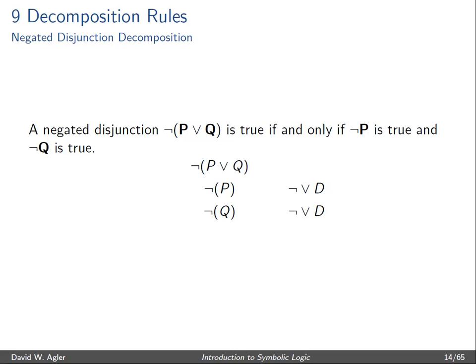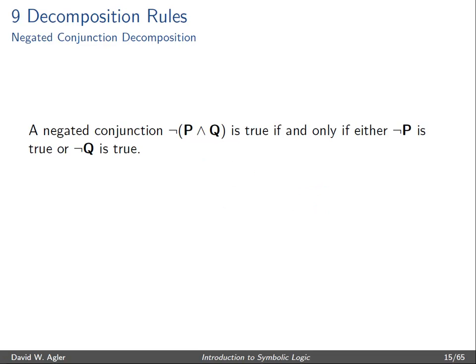So the negated disjunction decomposition rule is a stacking rule. A negated conjunction by contrast is true if and only if either negation P is true or negation Q is true. Since there are three scenarios under which the negated conjunction is true, we'll make use of a branching rule.